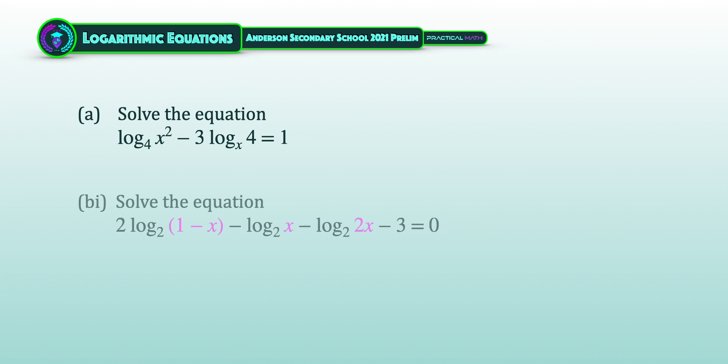Next, solve a separate logarithmic equation of 2 times log (1 minus x) to the base of 2, minus log x to the base of 2, minus log 2x to the base of 2, subtract 3, equal to 0.